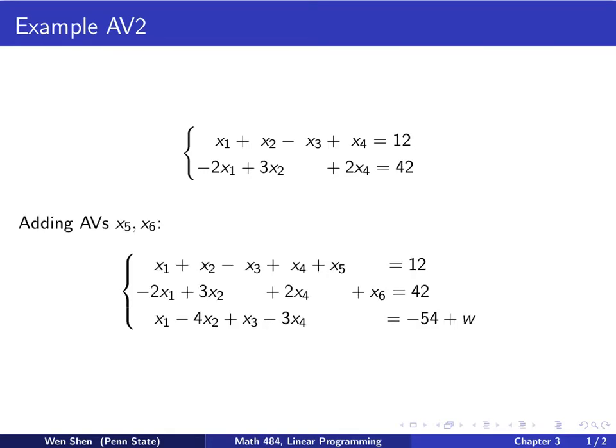Now let's go ahead and add two artificial variables, one for each equation. We add x5 for the first equation and x6 for the second equation. Then we introduce the variable W, which is x5 plus x6. It will satisfy the last equation, and we try to minimize W.